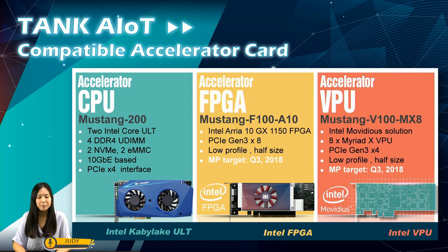As mentioned earlier, Tank 870 AI expansion slots are designed to offer accelerator card usage. The CPU accelerator card Mustang 200, developed by IEI, has already been launched last year. Following that, the FPGA Accelerator and VPU Accelerator — both Intel-IEI joint developing solutions — are preparing to go to market in this year's third quarter. These accelerator cards can help customers easily fulfill different kinds of AI inference demands.